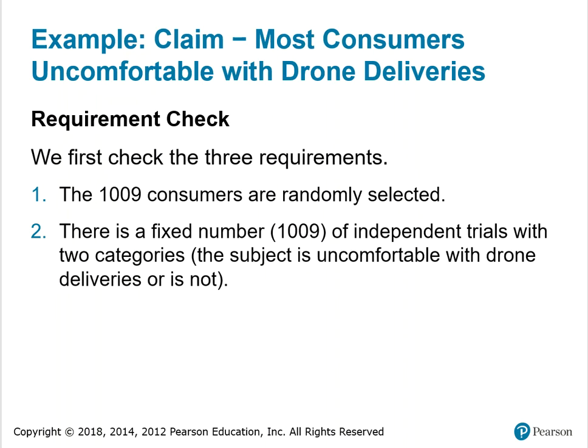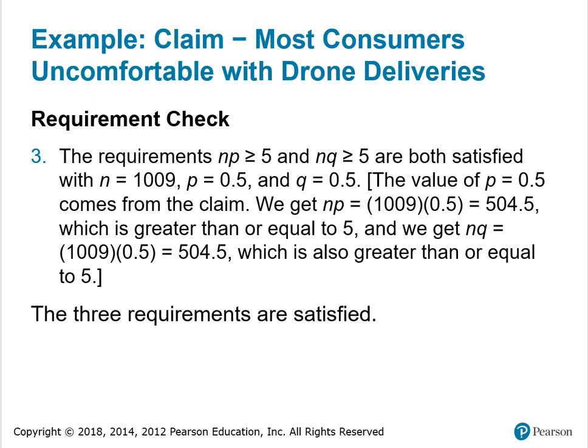First, we check the three requirements. The 1,009 consumers are randomly selected. There's a fixed number, 1,009, of independent trials with two categories — the subject is uncomfortable with drone deliveries or is not. The requirements N times P is greater than or equal to 5 and N times Q is greater than or equal to 5 are both satisfied with N of 1,009, P of 0.5, and Q of 0.5. N times P: 1009 times 0.5 is 504.5, which is greater than or equal to 5. N times Q: 1009 times 0.5 is 504.5, which is also greater than or equal to 5. The three requirements have been satisfied.